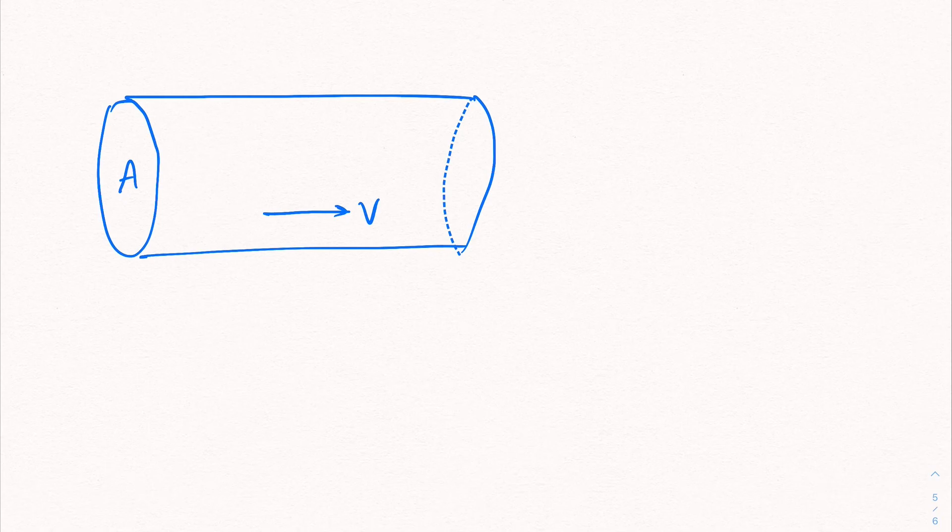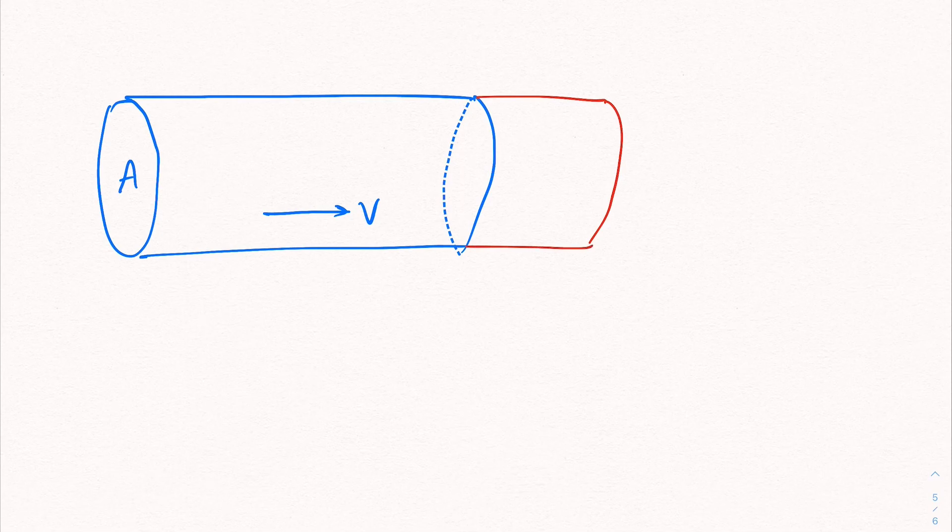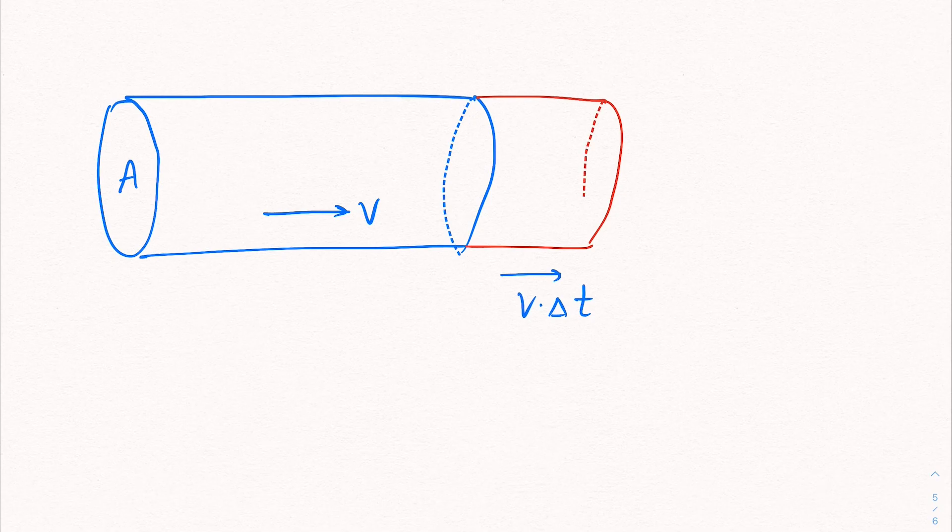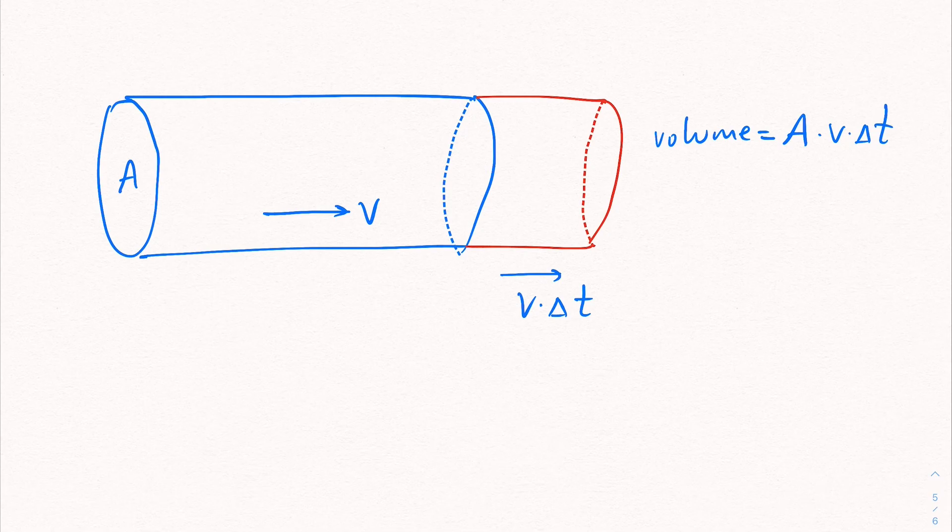And what happens is that as time passes, let's say delta t time passes. What happens is that the cylinder moves by an amount of v times delta t. And basically, the volume of this moved part can be found by multiplying a with v times delta t. So the volume is a times v times delta t.